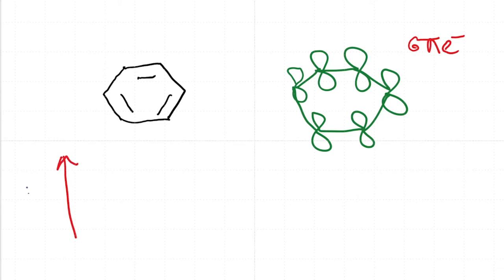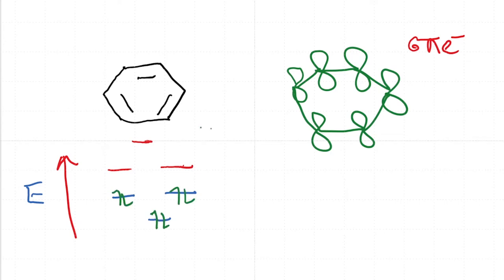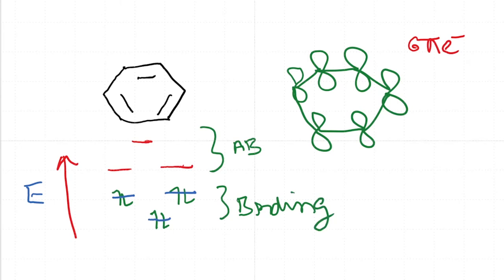The molecular orbital picture is going to look something like this. Here are the bonding orbitals and here are the anti-bonding orbitals. If you fill in electrons, you have 2, 4, and 6 electrons. These are the anti-bonding orbitals and these are the bonding orbitals. You have 6 pi electrons in the system and they are delocalized.